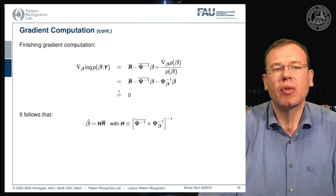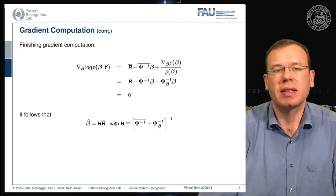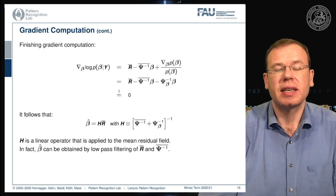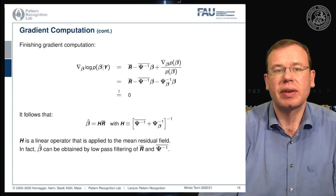Solving for β̂, it can be written as a simple matrix multiplication: H times the mean residual matrix, where H is the sum of the two inverted covariance terms, inverted again. H is a linear operator applied to the mean residual field. In fact, β̂ can be obtained by low-pass filtering of the mean residual and the mean inverse variances.